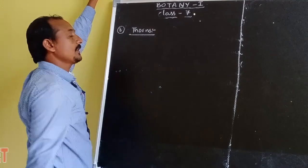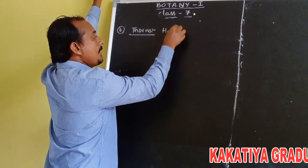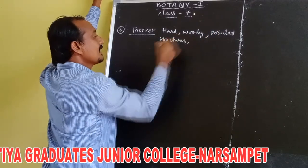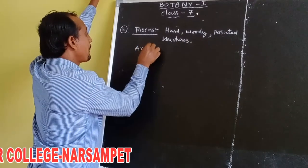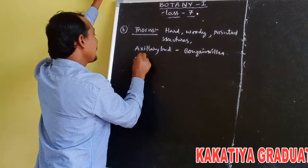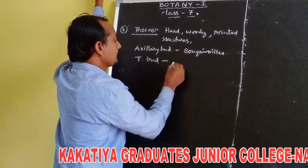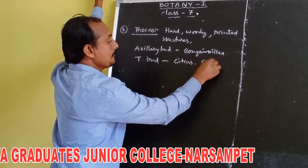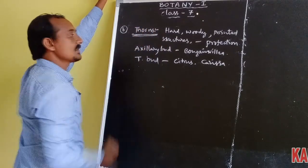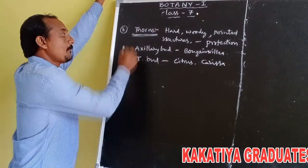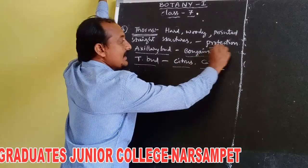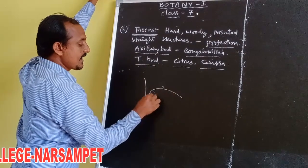The second type of aerial stem modifications are thorns. Thorns are hard and woody, pointed or needle-like structures that develop from an axillary bud in Bougainvillea and from a terminal bud in Citrus and Carissa. These thorns are useful for protection purpose. This is the diagram of thorn.